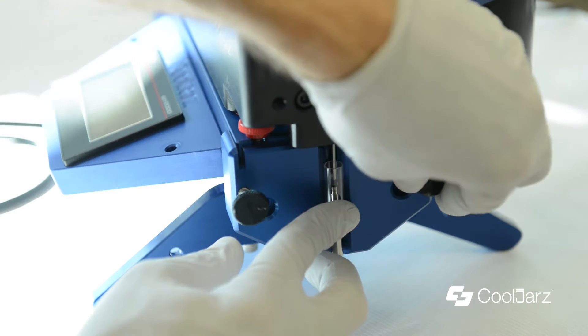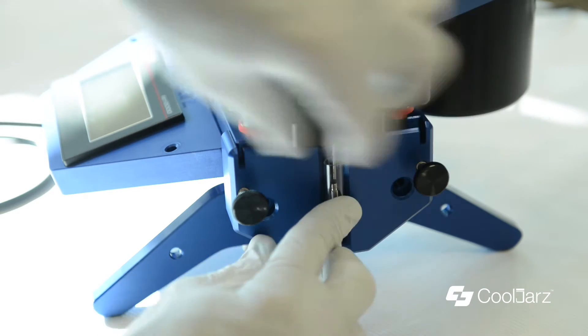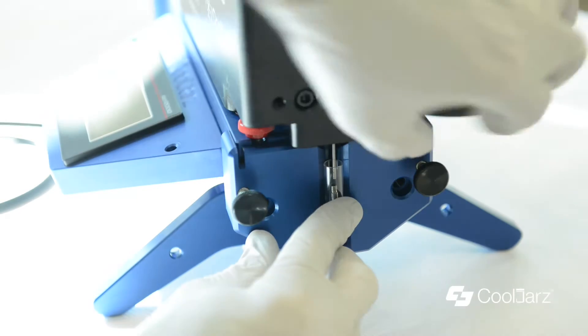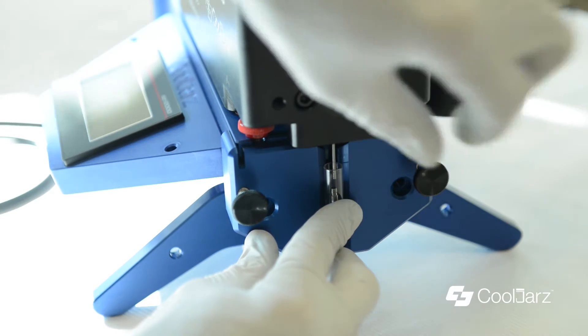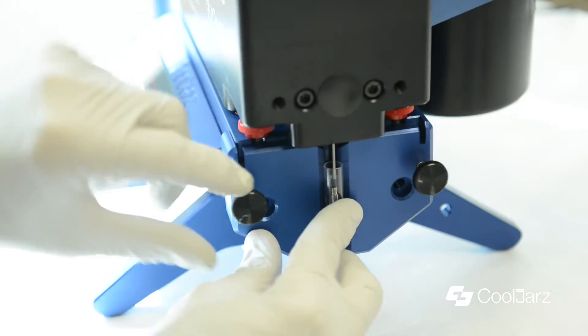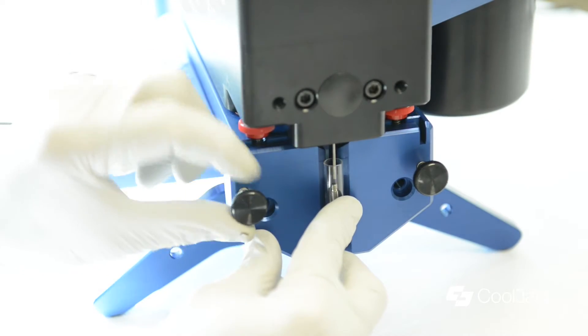And then once you get the manifold where you want it, you might have to loosen up the thumb screws a little bit too. Sometimes they get too tight. So the thumb screws are coming out, our thumb screws are being screwed in and the whole manifold is coming out.